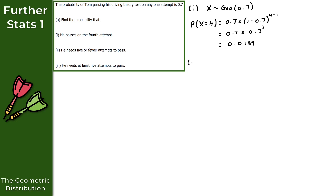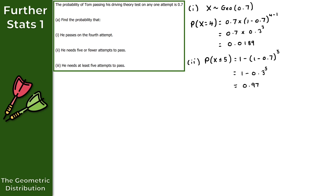For part two, we want the probability that Tom needs five or fewer attempts to pass, i.e., P(x ≤ 5). Using 1 − (1−p)^x = 1 − (1−0.7)^5 = 1 − 0.3^5. Evaluating on a calculator gives 0.973.